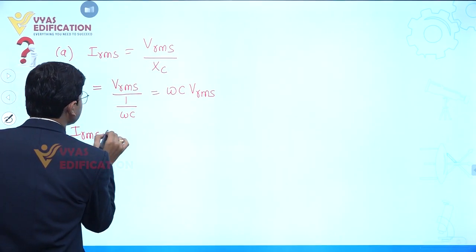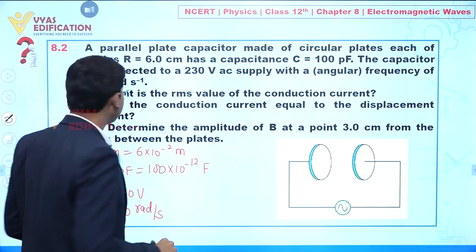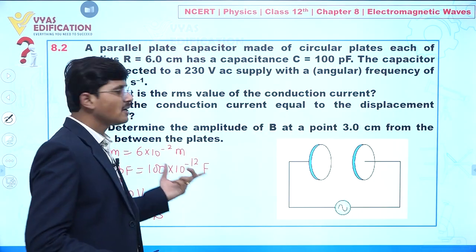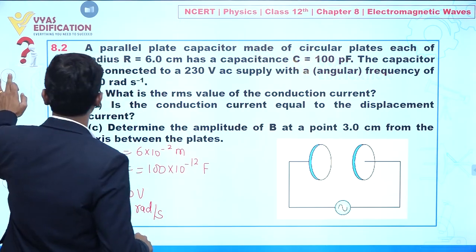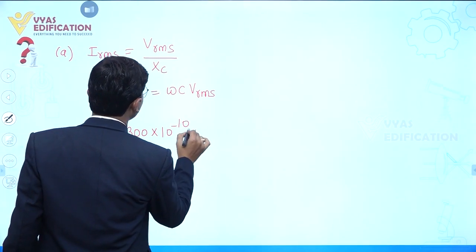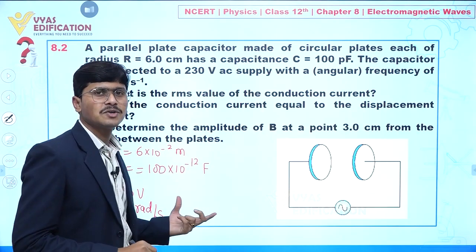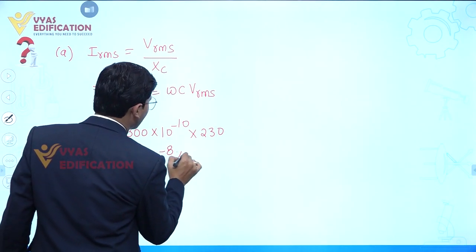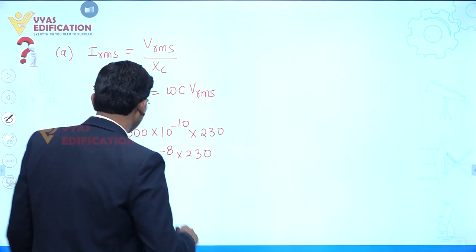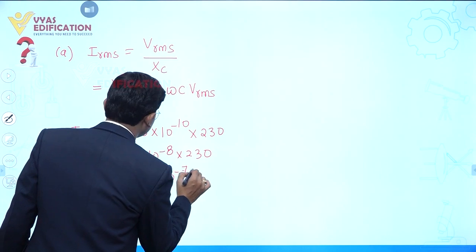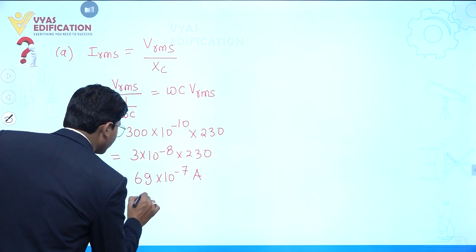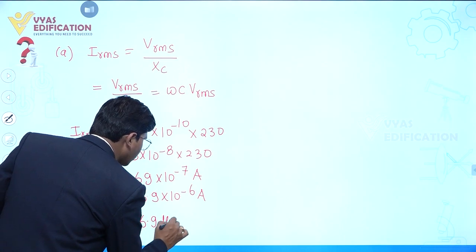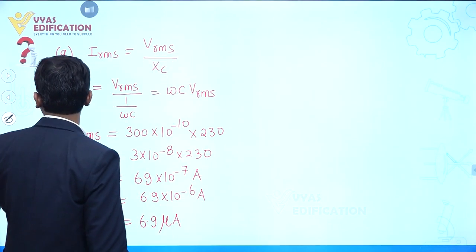From here, I_RMS is given by the value of omega, which is 300 radian per second, multiplied by C = 100 × 10⁻¹² = 10⁻¹⁰ farad, multiplied by V_RMS = 230 volt. This gives us 6.9 × 10⁻⁶ ampere, which is 6.9 microampere. This is the value of I_RMS — that is all about part A.